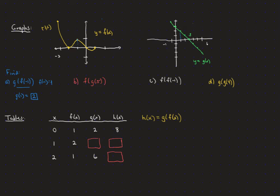F of g of 5 means we start by finding g(5). On the g graph we go to 5 and read the y-value as 2 — actually, that's a negative 2. That goes into f as an x-value. f(−2), it looks like, is 0. And that's going to be our answer.